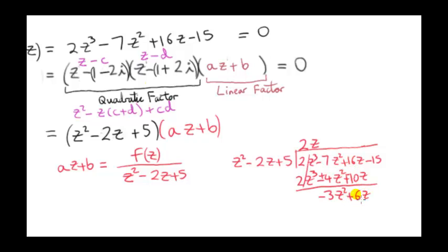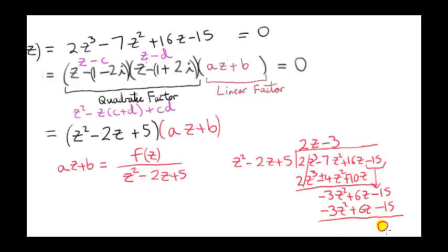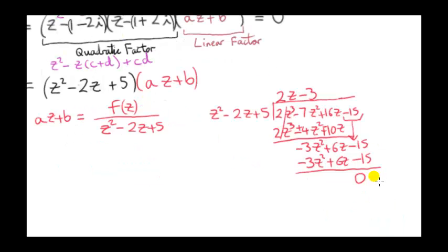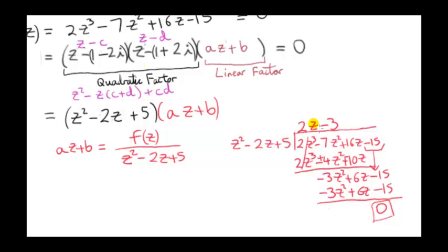After subtraction, the next step is to bring down the next term. Then we go back to the division step: divide z squared into minus 3z squared to get minus 3. We multiply minus 3 by all of the quadratic. When we subtract, we get zero remainder. We expect a remainder of zero because we know that the quadratic is a factor of the cubic. So az plus b equals 2z minus 3, meaning a equals 2 and b equals minus 3.